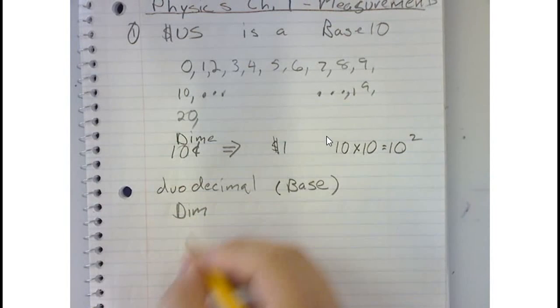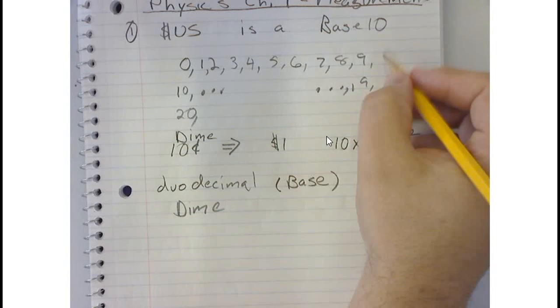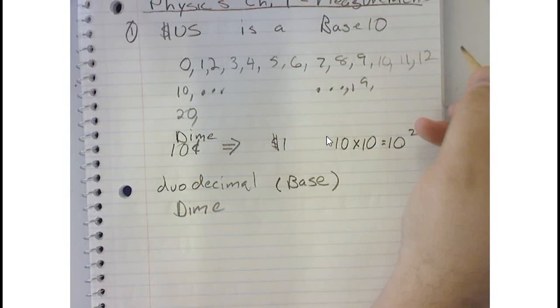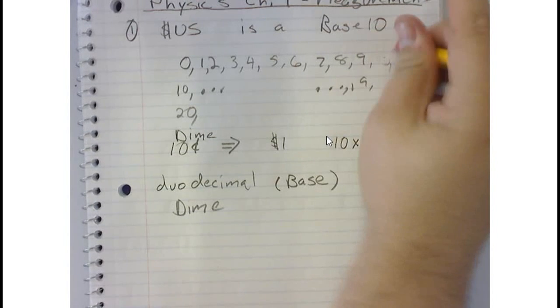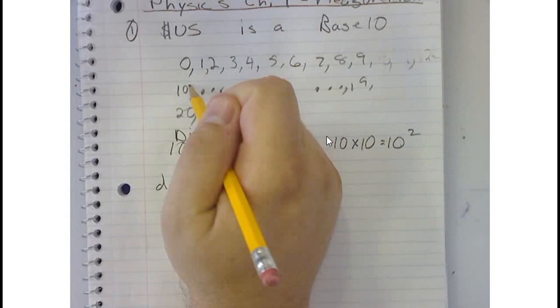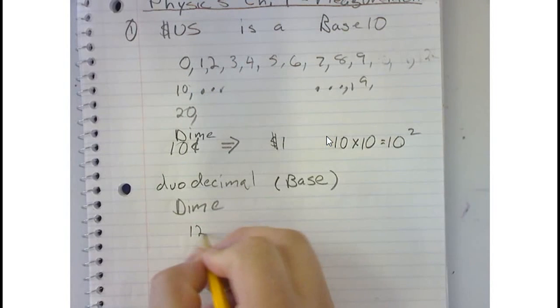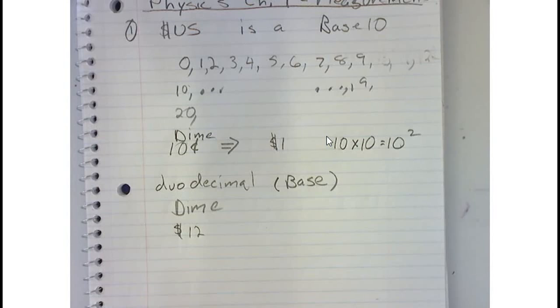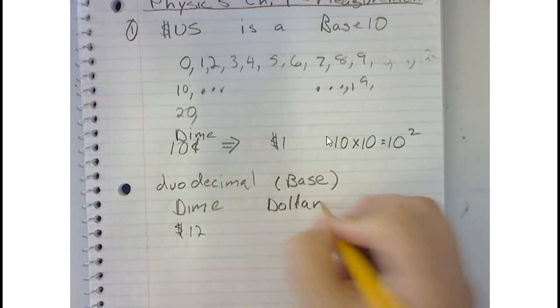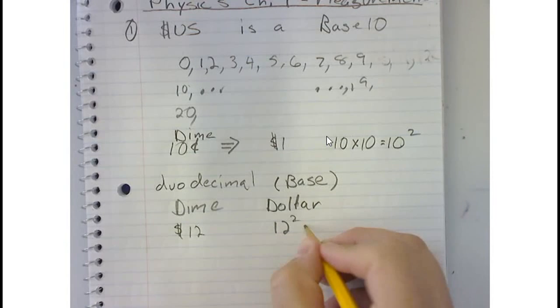So what that would mean is that my dime in this system would be equal to what? So I would go 10, 11, 12, but I wouldn't put the ones that have different characters. This next number would be 12. So a dime would actually be 12 cents, and then a dollar would be 12 squared, which would actually be a dollar 44.